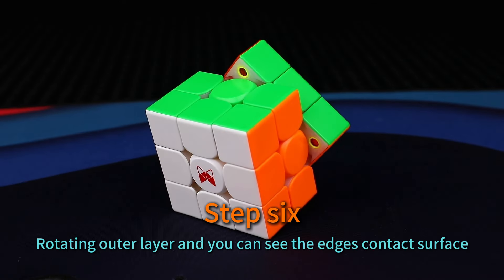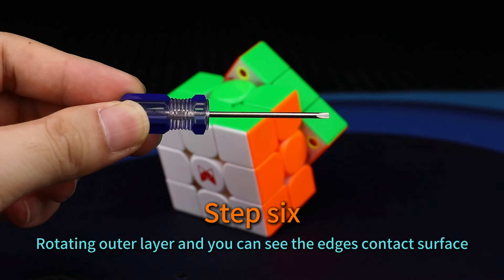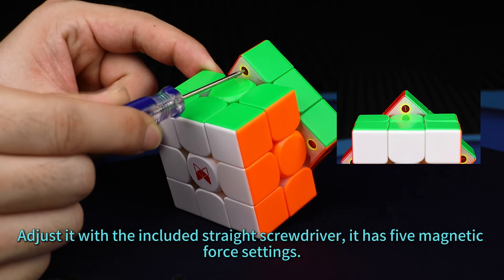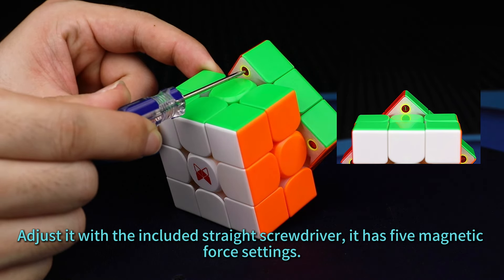Step 6. Rotating outer layer and you can see the edge's contact surface. Adjust it with the included straight screwdriver. It has five magnetic force settings.